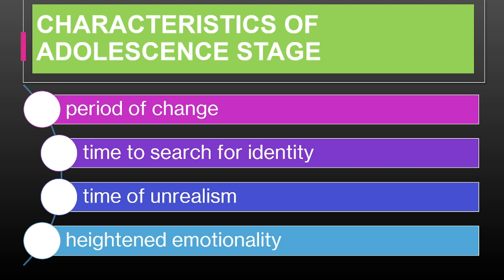Heightened Emotionality: emotions can be intense and fluctuate frequently as adolescents deal with their evolving sense of self. An adolescent might react strongly to social situations, such as feeling elated after a positive event or deeply upset after a conflict with friends. The play is filled with extreme emotions — joy, despair, rage, and love — all of which are heightened during adolescence. Romeo and Juliet's reactions to each other and their circumstances are intense and often lead to impulsive actions. Their feelings about their families, their love, and their ultimate fate all showcase the emotional extremes experienced during this stage.